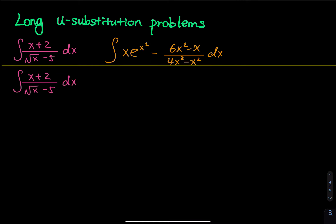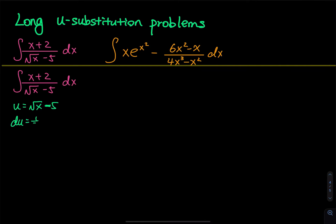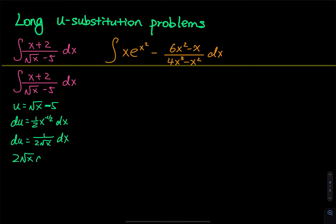I would like to let u equal to the square root of x minus 5. If you let u equal to x plus 2, that is not going to do anything. Then du — the derivative — is one-half x to the negative one-half dx, which equals 1 divided by 2 root x, dx. So isolating dx on one side, we have 2 root x du equals dx.